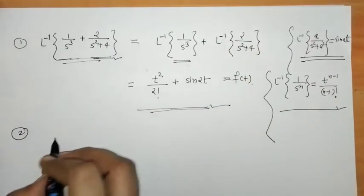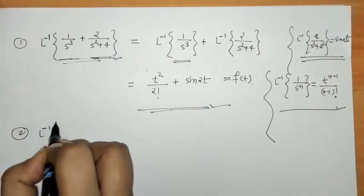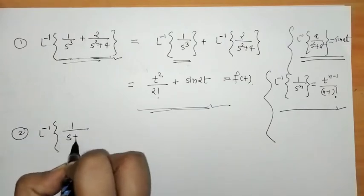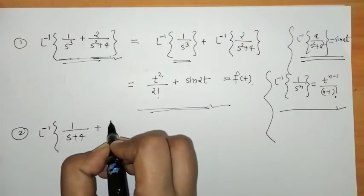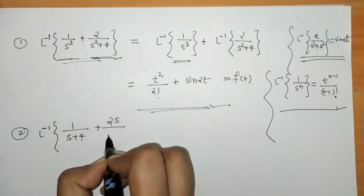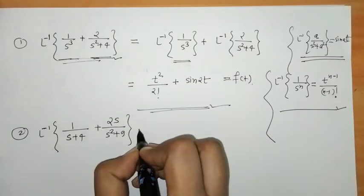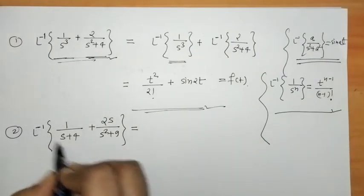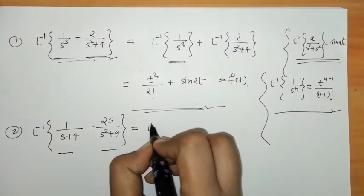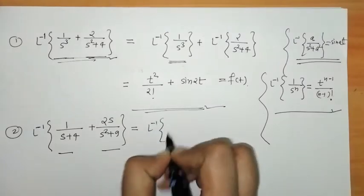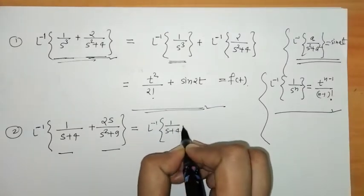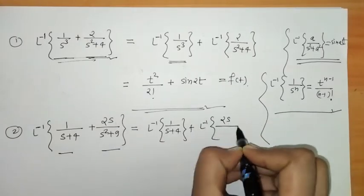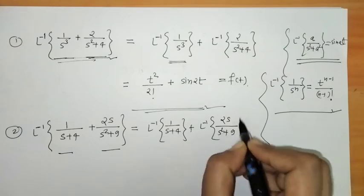For the second example, if we have to find L⁻¹{1/(s+4) + 2s/(s²+9)}, we again operate L⁻¹ separately on the two functions: L⁻¹{1/(s+4)} + L⁻¹{2s/(s²+9)}.